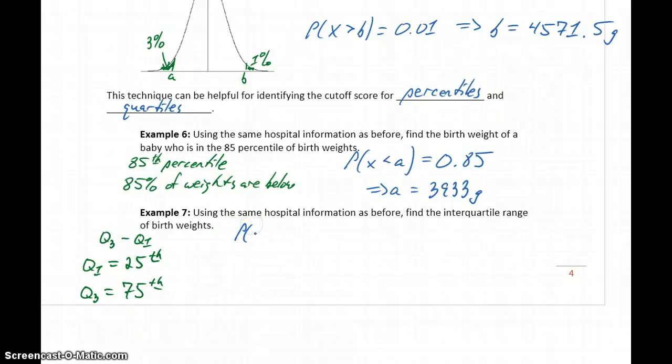So what we need to do is find the probability that x is less than some value A is equal to 0.25, the probability that x is less than some value B is equal to 0.75, and then we'll take this value B, which is the third quartile, minus A, which is the first quartile, to get our interquartile range.